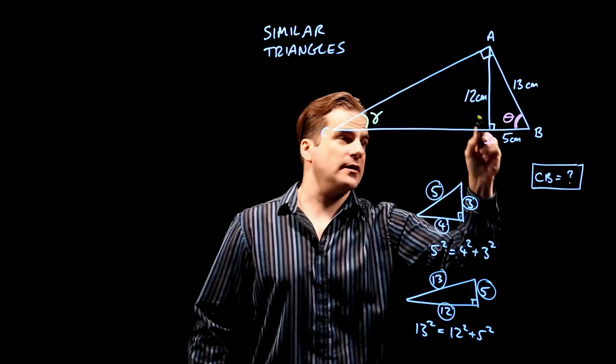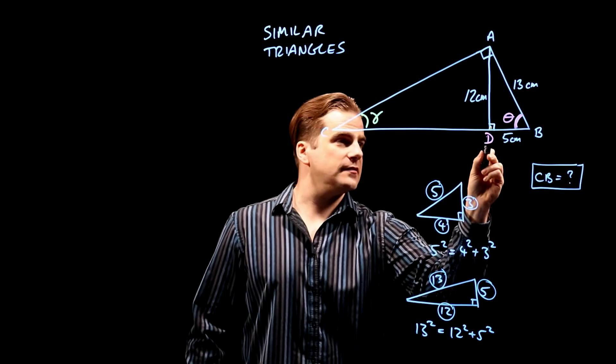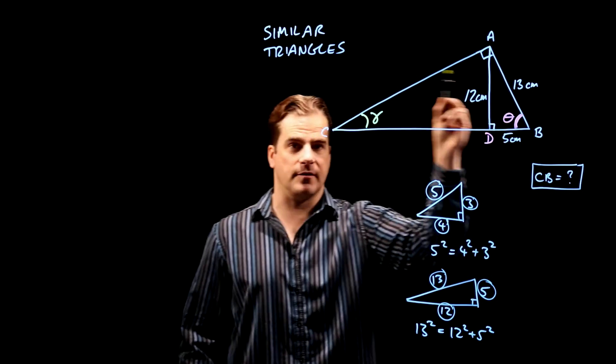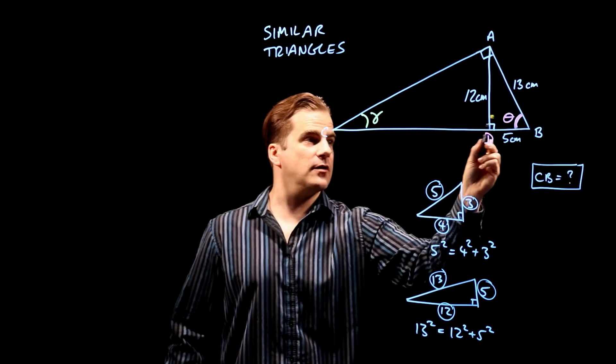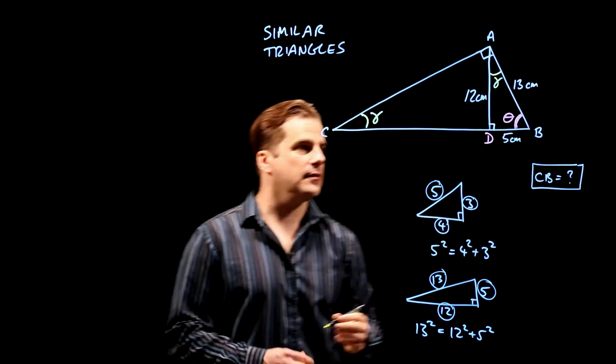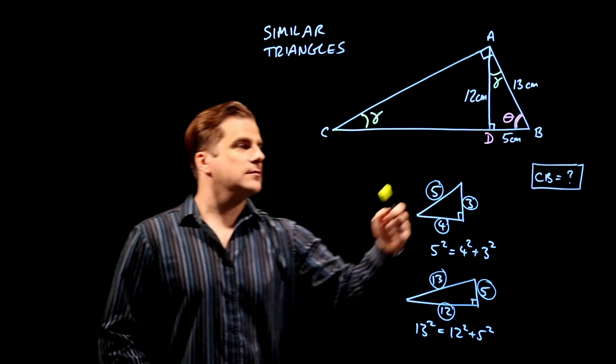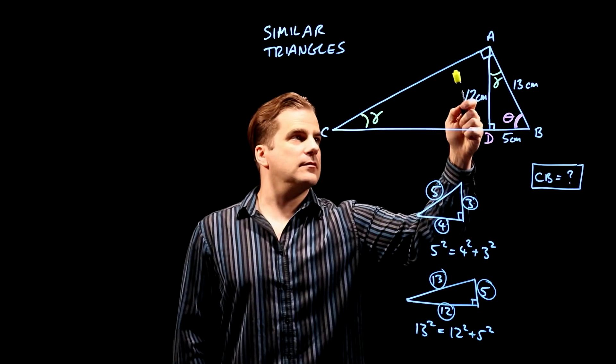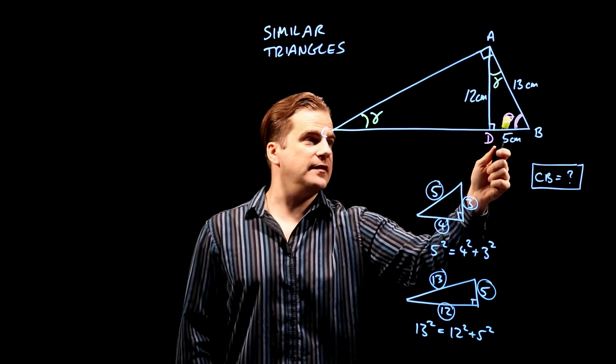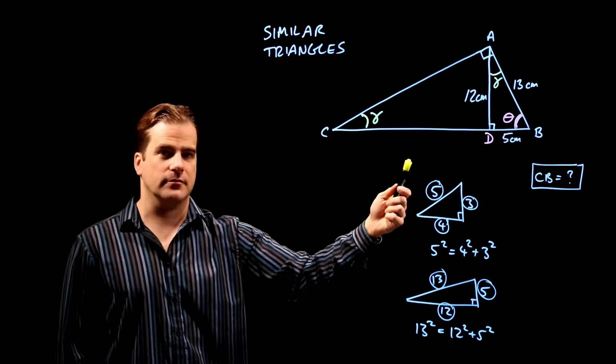Now look at the little triangle ABD. This triangle has a right angle in it, like the big one, theta in it, like the big one. And so, therefore, its third angle must also be gamma. Because each triangle has three angles in it. If two of them are theta and right angle, the third one must be the same for both.